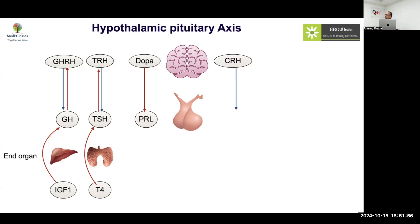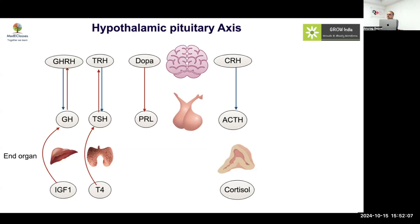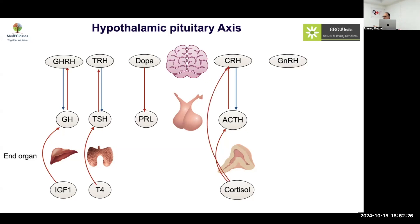CRH — corticotropin releasing hormone — regulates ACTH, and ACTH regulates cortisol. It also partially regulates aldosterone: about 10% of aldosterone secretion is regulated via ACTH, but the major determinant is the renin-angiotensin system. Cortisol inhibits ACTH, cortisol inhibits CRH, and ACTH inhibits CRH — these feedback processes we all know.